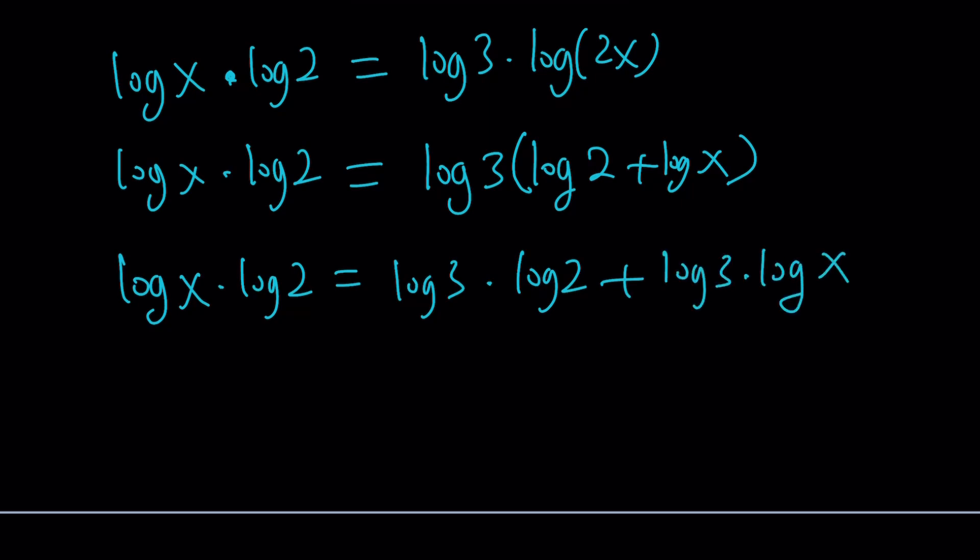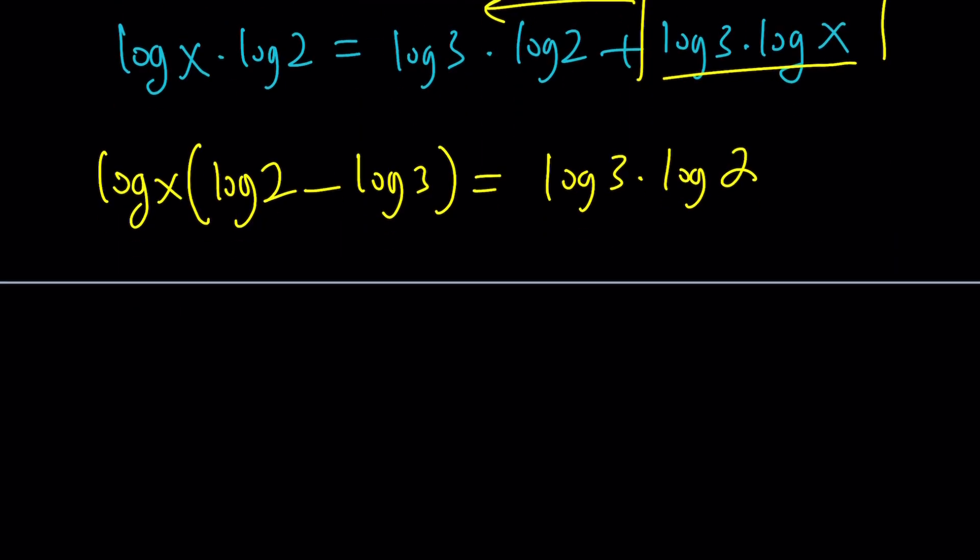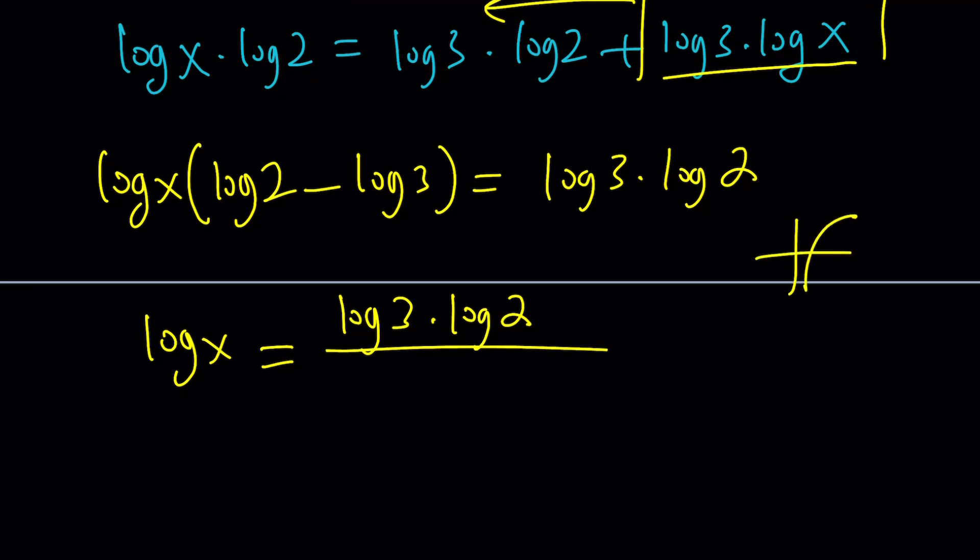Can we solve for log x? Yes, but first you need to simplify this. Log x times log 2 equals log 3 times log 2 plus log 3 times log x. Then what do we do? Since we're trying to solve for x, let's bring this over to the left by subtraction. We can take out a log x, gives us log 2 minus log 3 equals log 3 times log 2. This is a negative quantity, but don't worry about it. That's perfectly fine. Because if log of something is negative, that just means the whole thing is less than 1. The graph of a log function has an x intercept at 1, and anything less than 1 is going to give us an output that's negative.